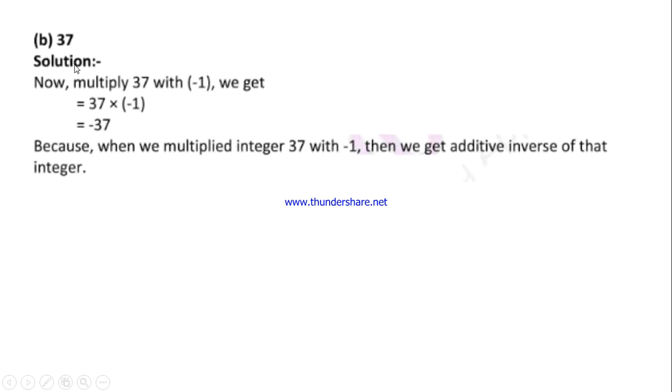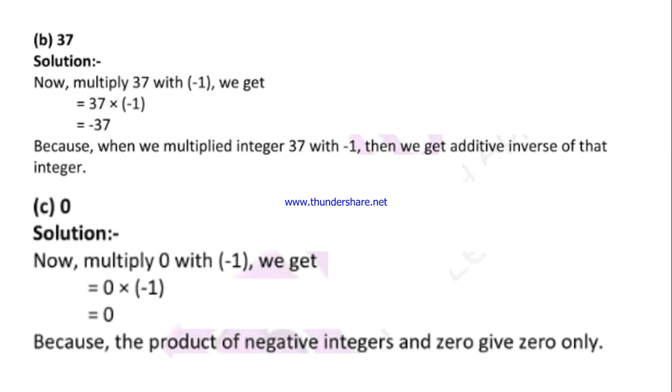Then the question 37. 37 multiplied by minus 1: plus into minus is minus, 37 ones are 37, so minus 37. Zero: any number multiplied by 0 is 0. So 0 multiplied by any integer we get the product as 0.